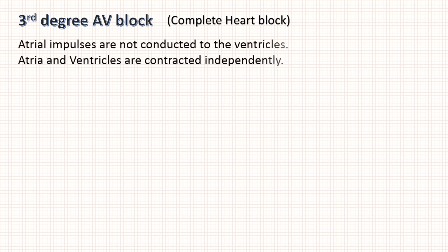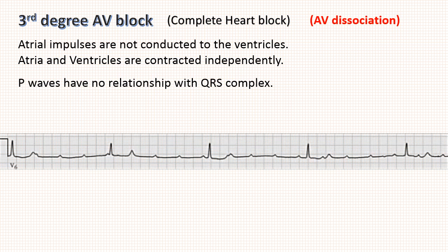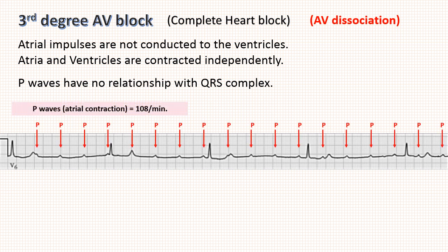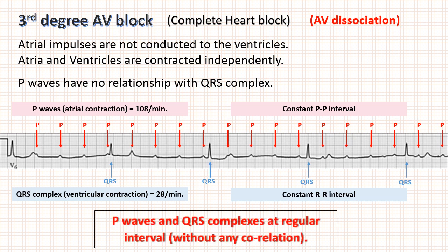Last is 3rd degree AV block, also known as complete heart block. Here atrial impulses are not conducted to the ventricles — the atria and ventricles contract independently, so P waves have no relationship with QRS complexes. Therefore it is also known as atrioventricular dissociation or AV dissociation. Looking at this ECG: P waves are occurring at regular intervals at the rate of 108 per minute, and QRS complexes are also occurring at regular intervals with no relation to the P wave, at the rate of 28 per minute. Note that the PP interval and RR interval are each constant. The keywords are presence of P waves and QRS complexes at regular intervals but without any correlation.